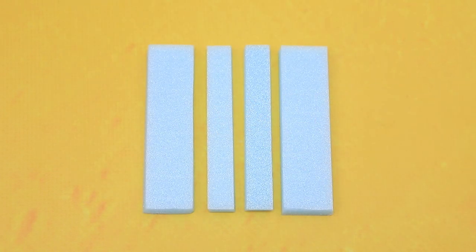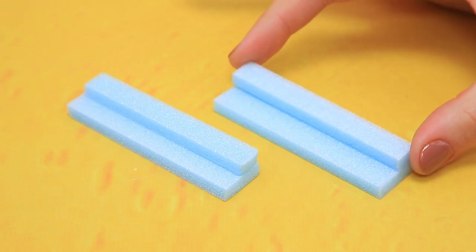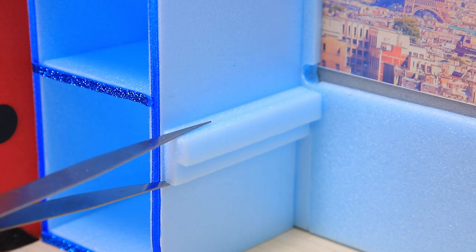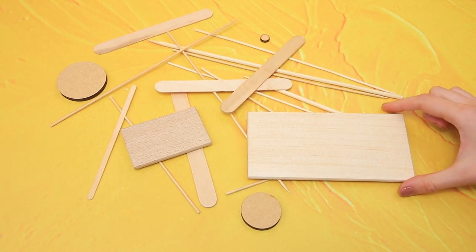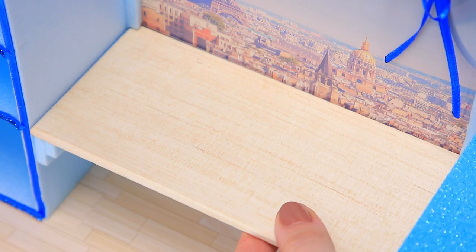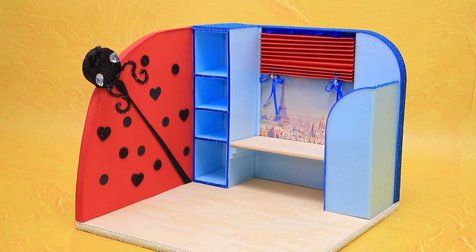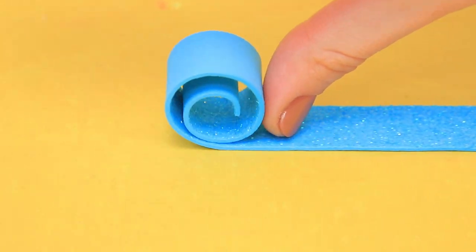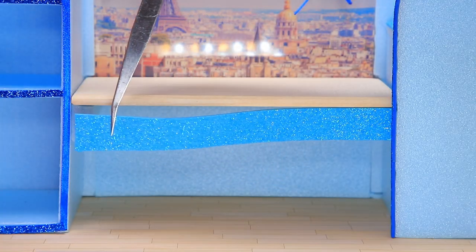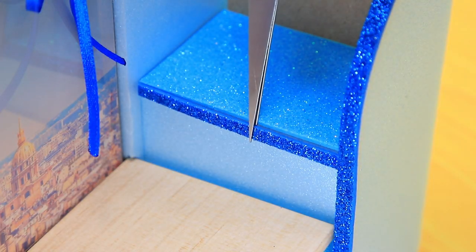Styrofoam separated into strips. Secure the rails. Add small details. There are so many details! Decorate the bottom with a strip of foam paper. Add small details.